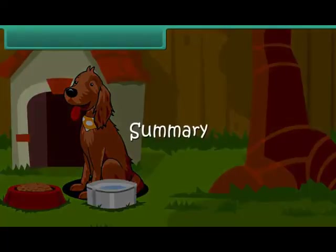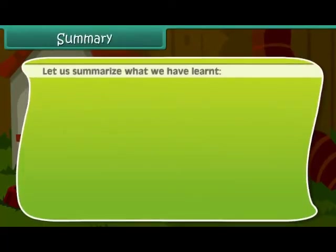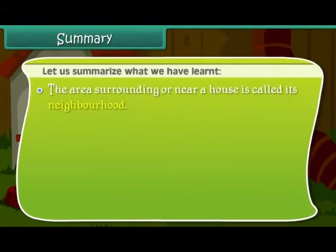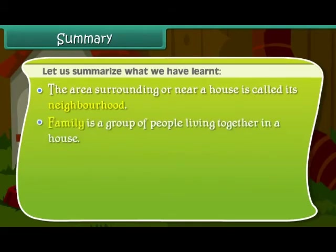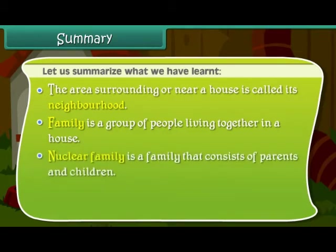Summary: Let us summarize what we have learnt. The area surrounding or near a house is called its neighborhood. A family is a group of people living together in a house. A nuclear family is a family that consists of parents and children.